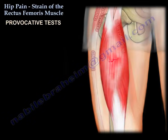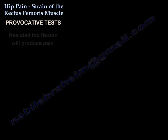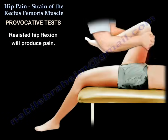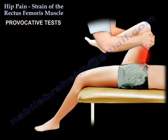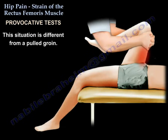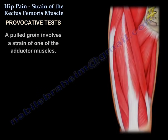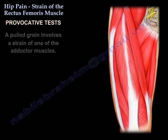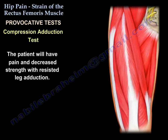Then you will do the provocative test. A resisted hip flexion will produce pain. This situation is different from a pulled groin, which is an adductor muscle strain. The patient will have pain and decreased strength with resisted leg adduction, and it is called the compression adduction test.